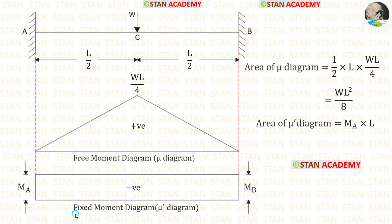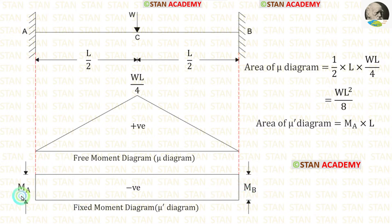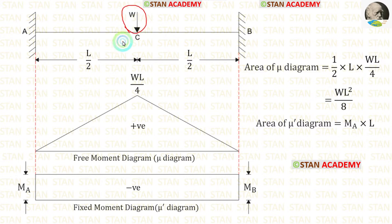Now let us see how to draw the fixed moment diagram. In the fixed supports, there will be moment. In fixed support A, the moment is MA. In fixed support B, the moment is MB. Using these two moments, we have to draw the fixed moment diagram. In this beam, the point load is acting in the center, so it is symmetrical loading.